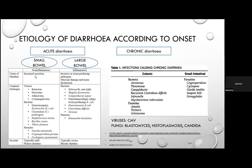Common aetiologies of acute small bowel diarrhoea include viruses — rotavirus, norovirus, adenovirus, CMV — and bacteria such as enterotoxigenic E. coli, Clostridium perfringens, Staph aureus, Bacillus cereus, and Vibrio cholerae, plus parasites like Giardia intestinalis, Cryptosporidium, and Cyclospora. These patients typically have mild, watery, non-bloody diarrhoea with few systemic signs.